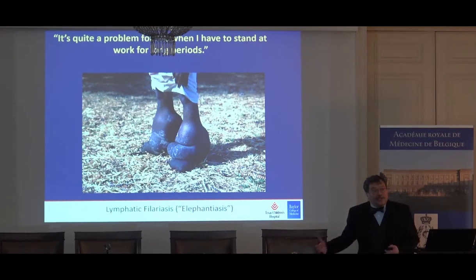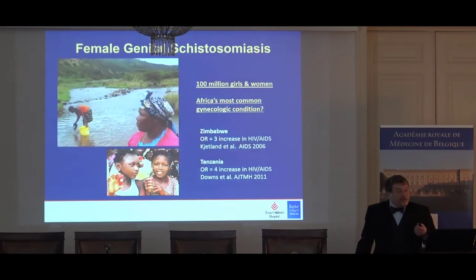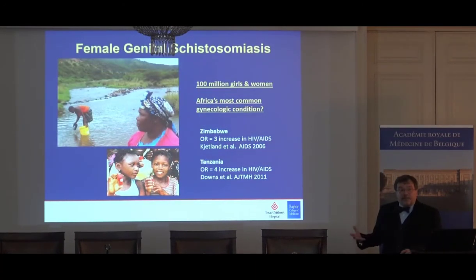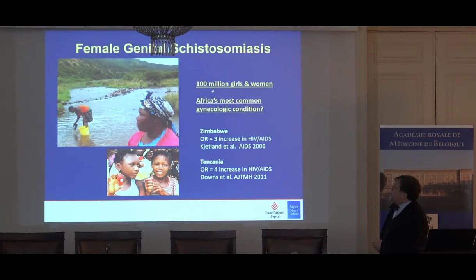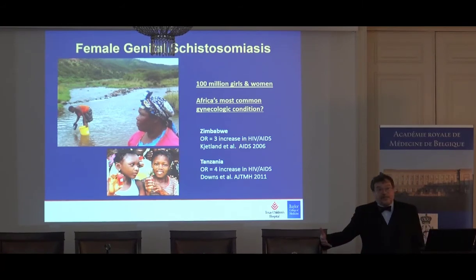One of the issues about neglected tropical diseases is that many were not killer diseases — they were debilitating rather than killer diseases, and that was a difficult concept to get people to care about. Here's another example: female genital schistosomiasis, affecting 100 million girls and women on the African continent, arguably the most common gynecologic problem there, and now linked to a three- to four-fold increase in HIV-AIDS transmission.